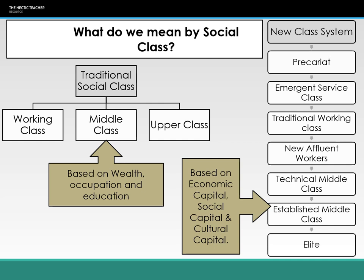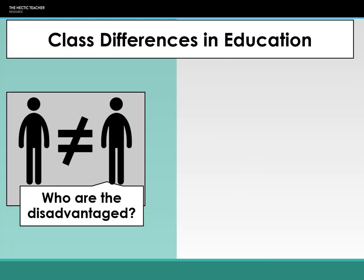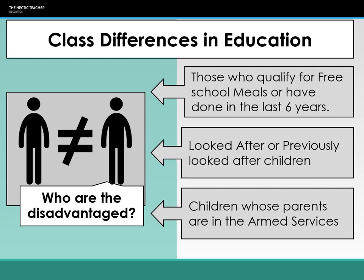Although sociologists use the term social class when looking at educational achievement, what they're actually talking about is the advantaged versus the disadvantaged. Students who are considered disadvantaged are those who qualify for free school meals or have done in the last six years, children who are looked after — in care, adopted, under the care of social services — or have previously been looked after children.